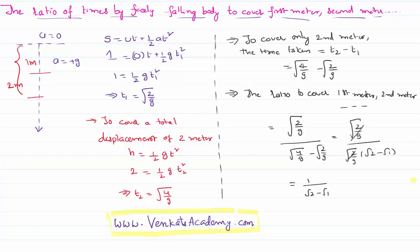So the ratio will be 1 is to root 2 minus root 1, and so on getting root 3 minus root 2 and so on. This can be further simplified. Thank you for watching, keep coming for more video lessons on this YouTube channel.